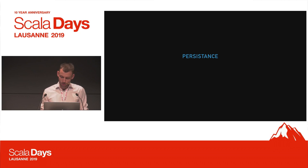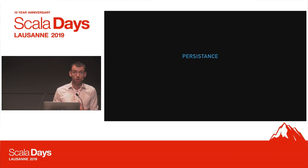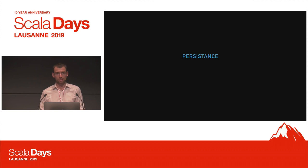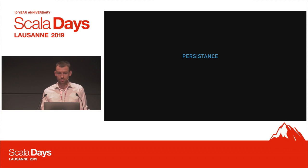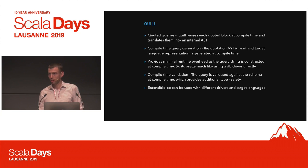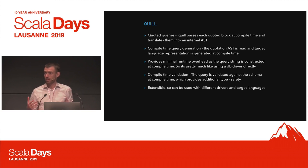A lot of applications running on mobile devices use some kind of persistence. We also wanted to use persistence — a database running on the device — and instead of just issuing SQL commands, we wanted to use a more high-level query representation. So we decided to look at Quill. Quill uses quoted queries, parsing each quoted block at compile time and translating it into an internal AST.